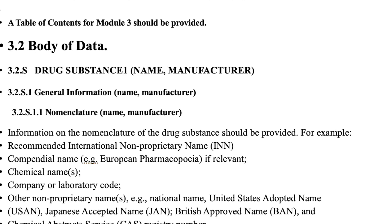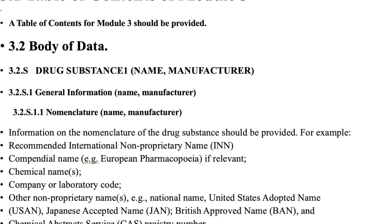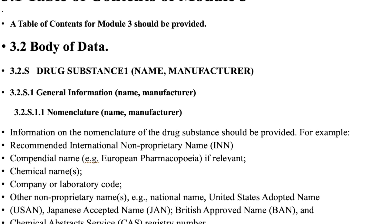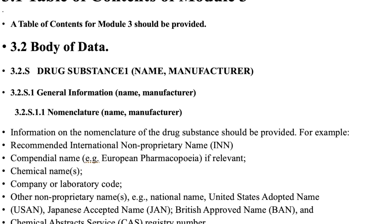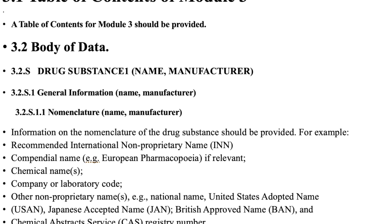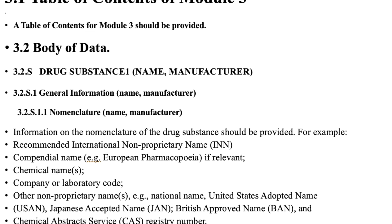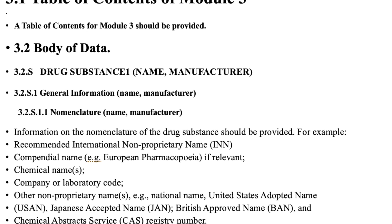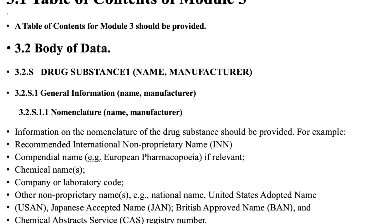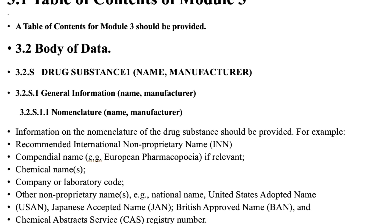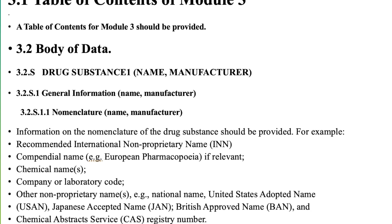3.1 Table of Contents of Module 3: A table of contents for Module 3 should be provided. 3.2 Body of Data — 3.2.S Drug Substance: Section 1 covers Name and Manufacturer. 3.2.S.1 General Information covers Name and Manufacturer.